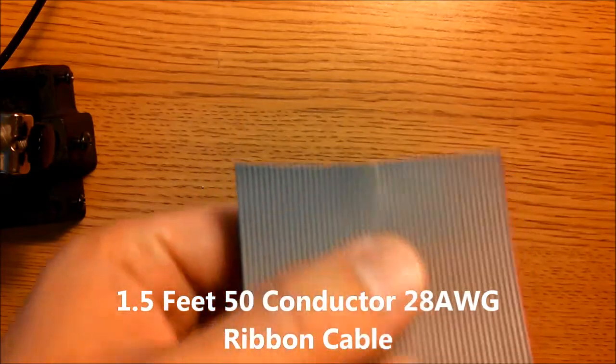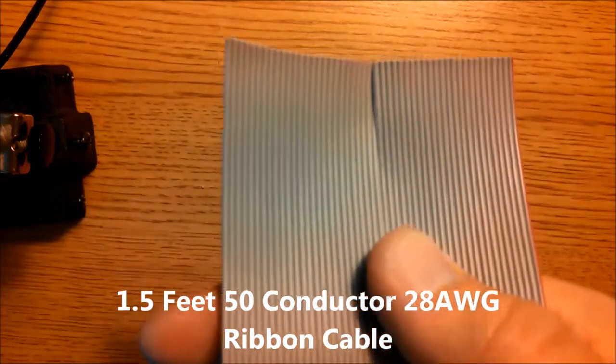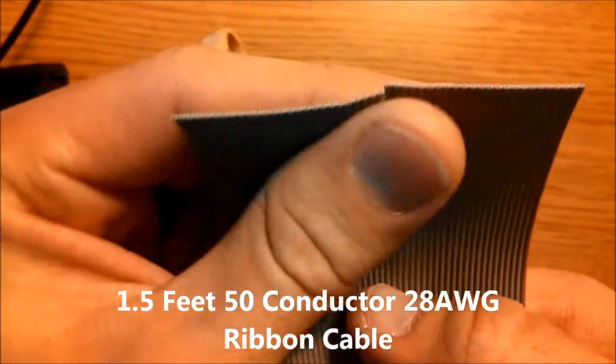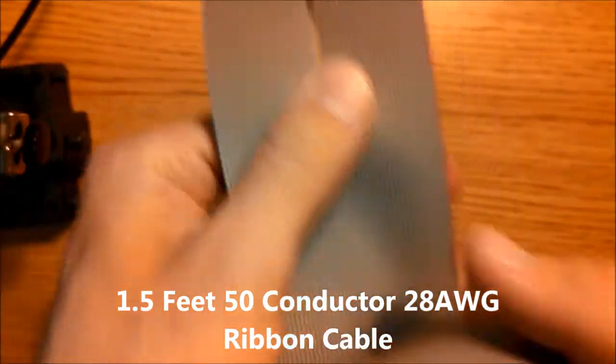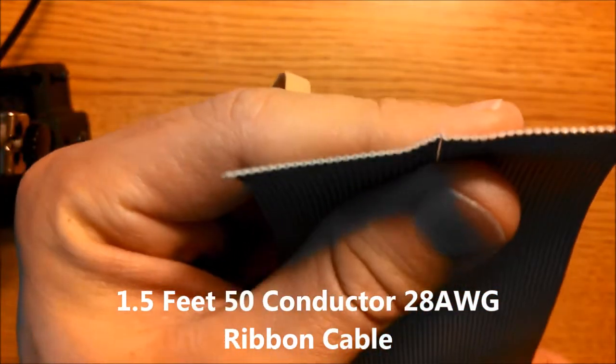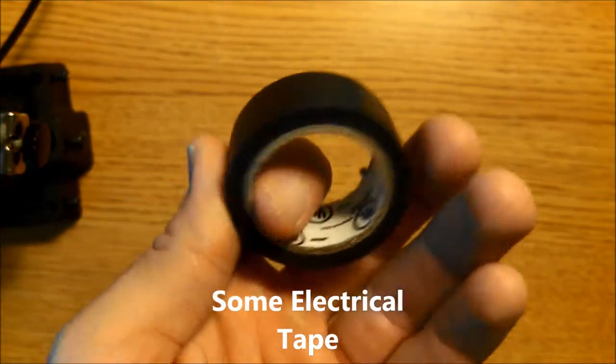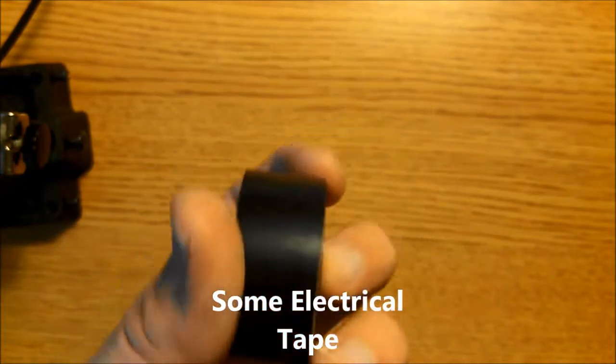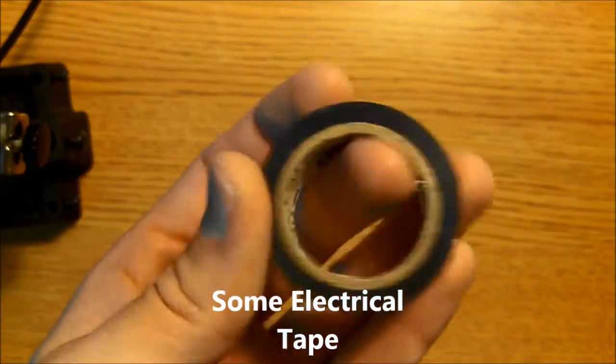Last but not least, you will need some 50 conductor cable. This is 28 gauge and you will need about a foot and a half of this. You will need some electrical tape to tape up the sidebars so light doesn't leak through.